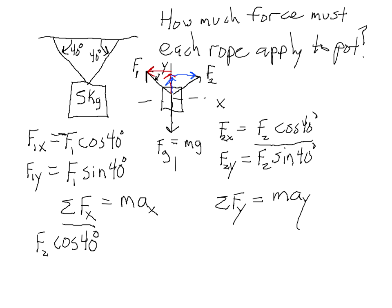The other x component we have is this one, minus F1 cosine 40 degrees. And that is equal to the mass of the pot, 5 kilograms, times the acceleration of the pot in the x direction. Well, I hope my pot is not accelerating at all in the x direction. That's sort of the point of the ropes, is to keep it from going anywhere. So the acceleration in the x direction is 0.